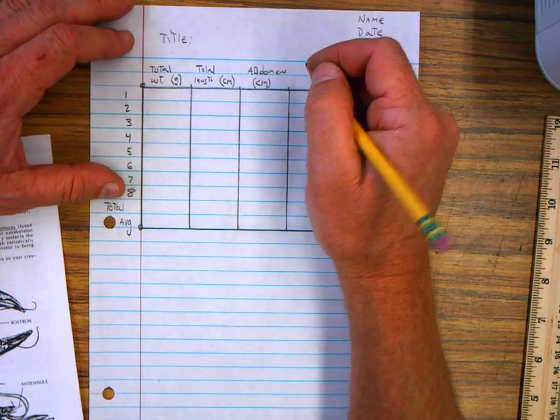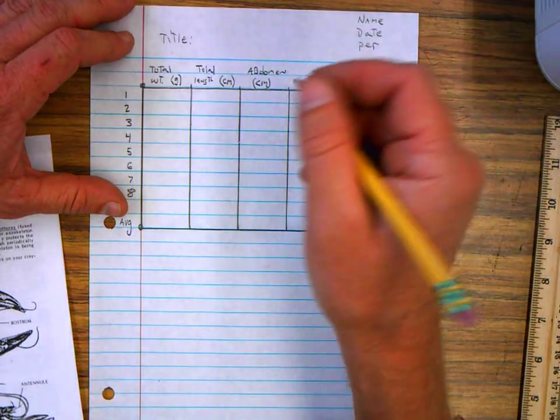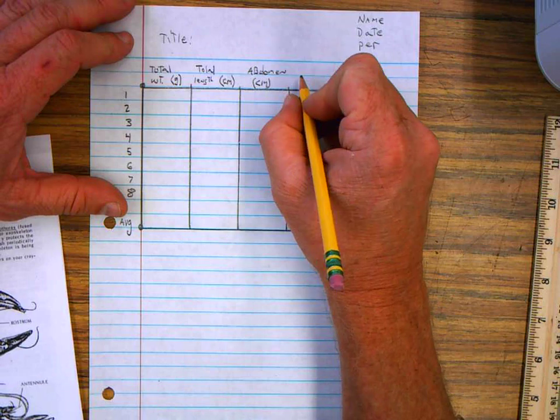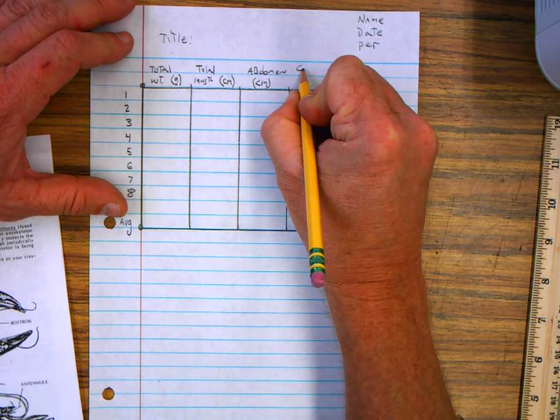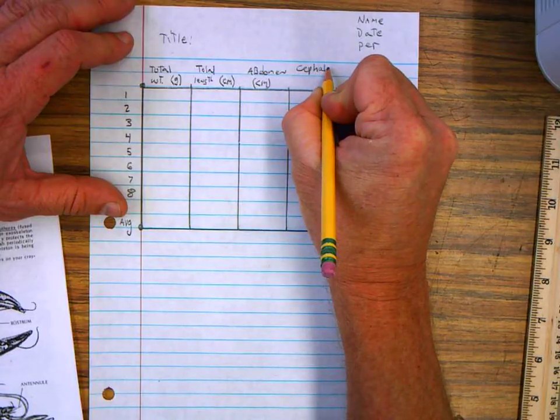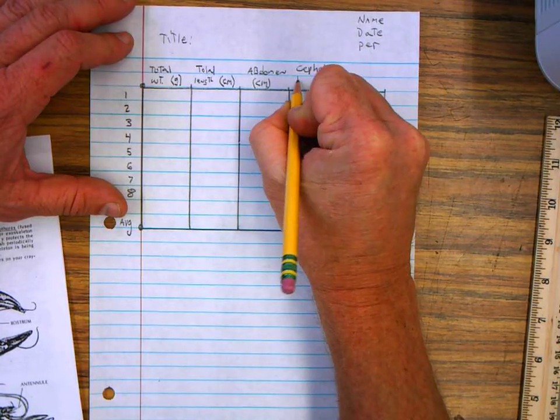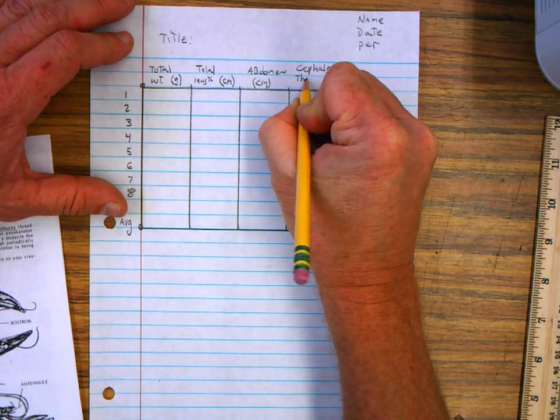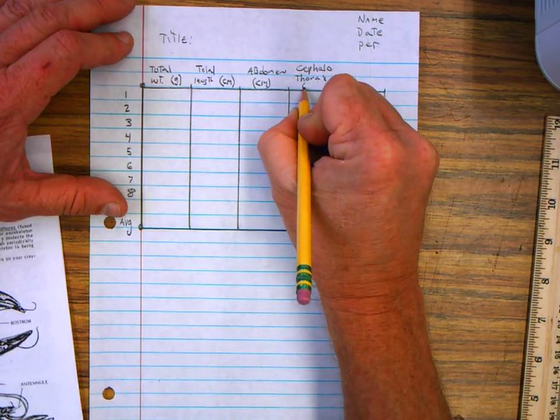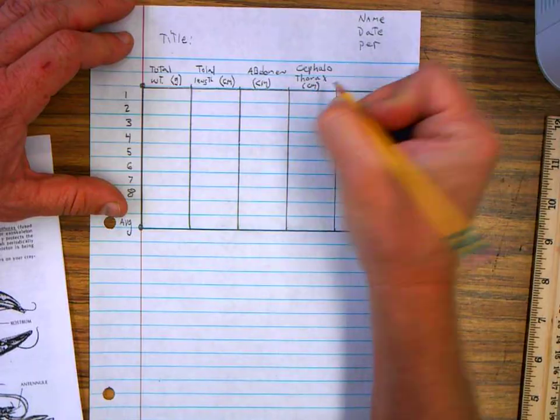Then the next one, I'm going to have to break it up because it's a long word, but it's called the cephalothorax. C-E-P-H-A-L-O thorax. And I'll explain what this means later. And again, it's in centimeters.